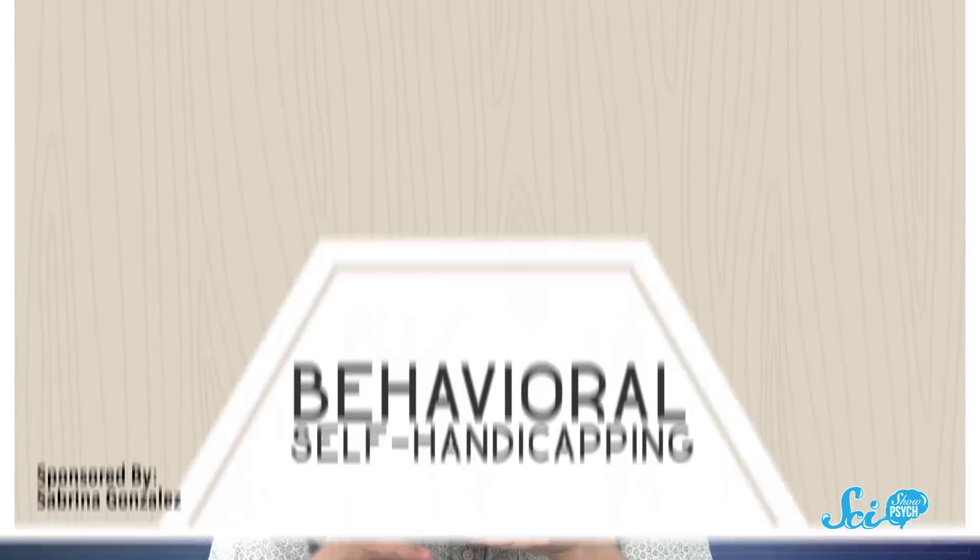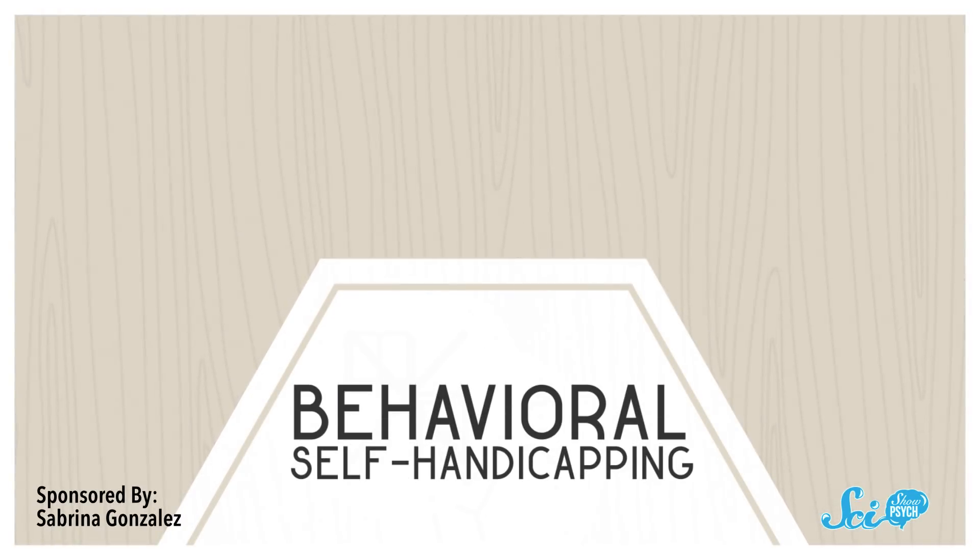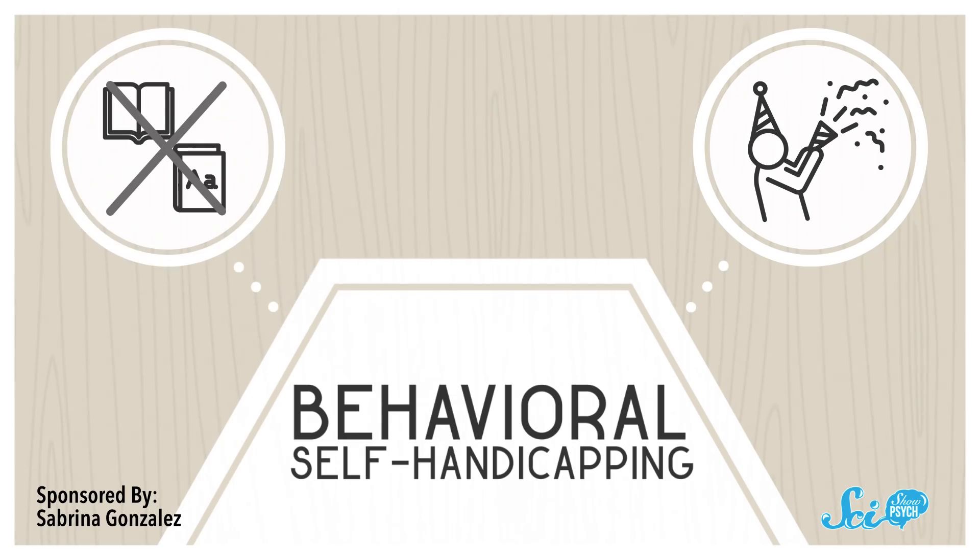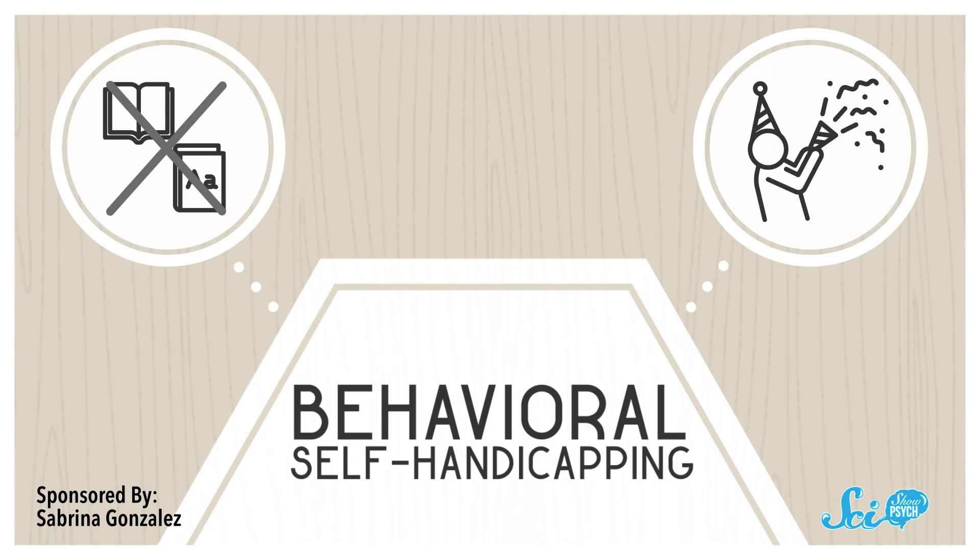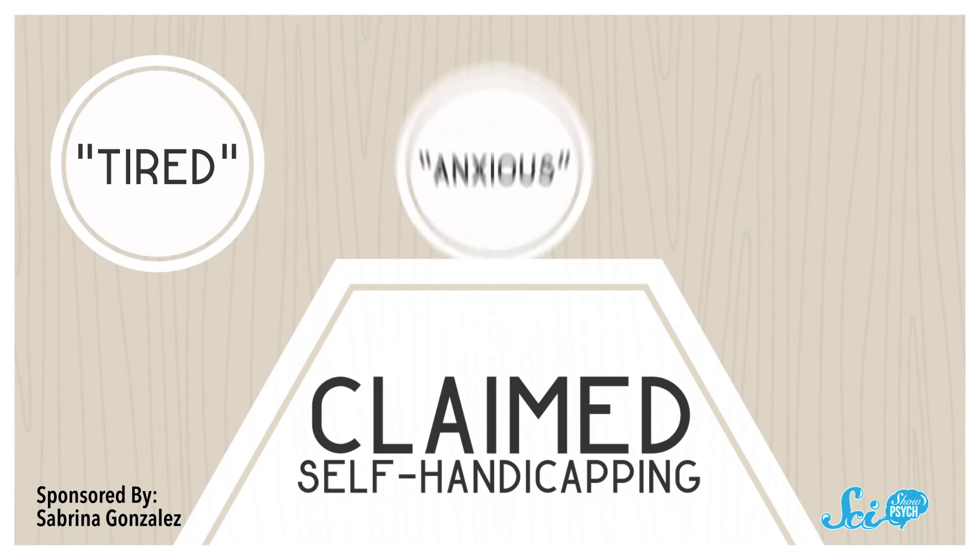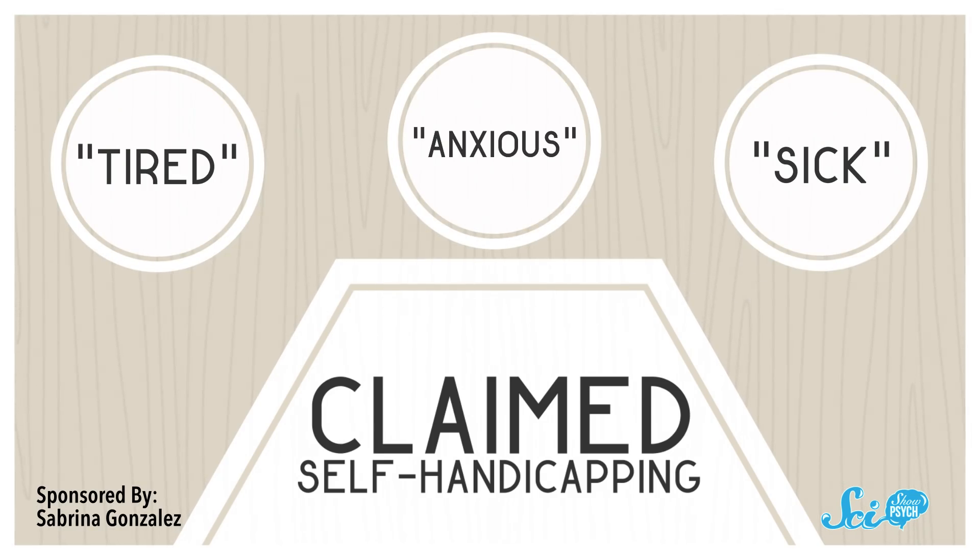Self-handicapping is fairly common, though some of us do it more than others. And research has defined two types. There's behavioral self-handicapping, when you actively do things like go out to a party or don't do things like study, which hurt your chances of success. Or there's claimed self-handicapping, like saying you're tired, anxious, or sick. These are reports of something that happened, or how you're not feeling your best.